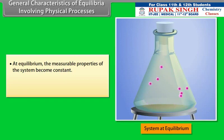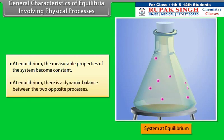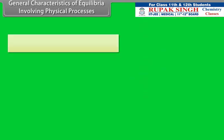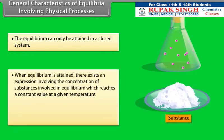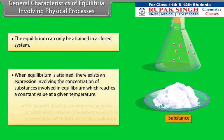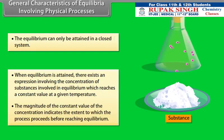General characteristics of equilibria involving physical processes: At equilibrium, the measurable properties of the system become constant. At equilibrium, there is a dynamic balance between the two opposite processes. Equilibrium can only be attained in a closed system. When equilibrium is attained, there exists an expression involving the concentration of substances in equilibrium which reaches a constant value at a given temperature. The magnitude of this constant value indicates the extent to which the process proceeds before reaching equilibrium.